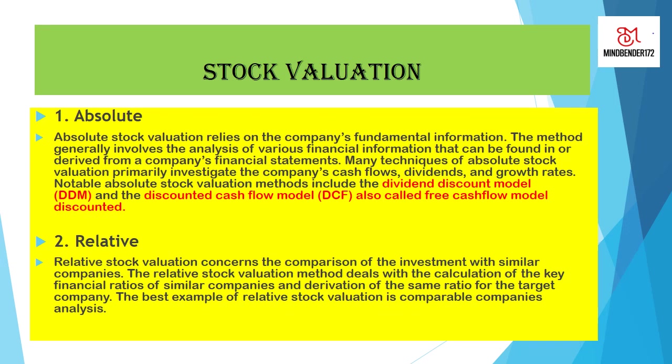Absolute stock valuation involves fundamental information from the financial statements of the company — all internal reports — to give a company's primary valuation through cash flows, dividends, and growth rates. It is of two types: the dividend discount model and the discounted cash flow model. Relative stock valuation involves information from comparable companies with similar PE ratios to compare their prices and derive our stock price.